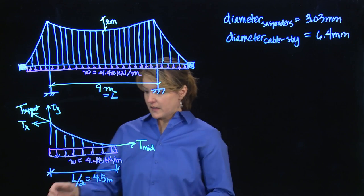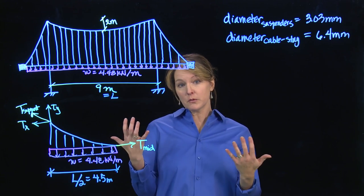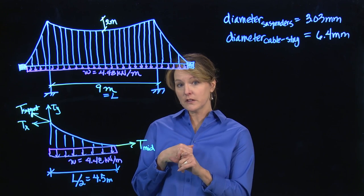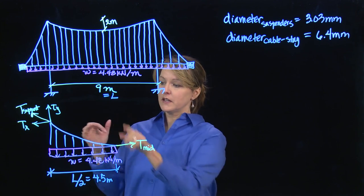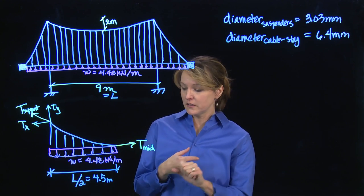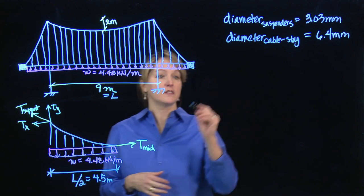So to figure out what those values are, we can still use equilibrium. We have horizontal and vertical equilibrium. But because we're looking at a piece of this bridge, we also have rotational equilibrium. And that is where I'm going to actually start.